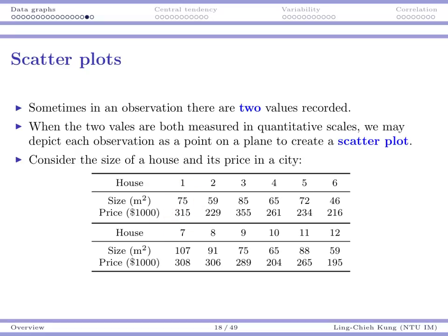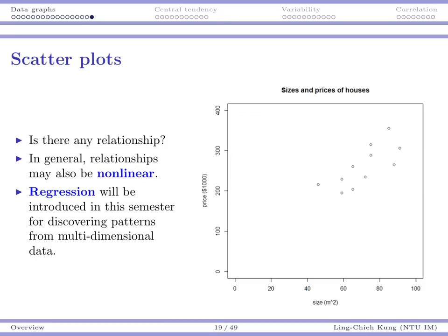We create a scatter plot by taking the two numbers as x and y coordinates and plotting each as a point in the plane. The resulting scatter plot has 12 points, one for each house. When we see this scatter plot, we can get a rough idea about the relationship. Here, it's highly possible to feel that there is a positive correlation between house sizes and prices — at least for these 12 houses, when size becomes larger, price also becomes larger.